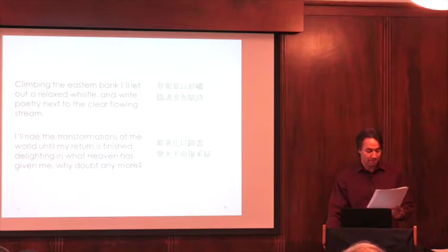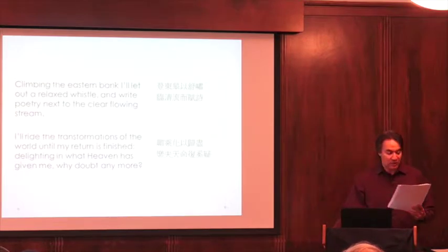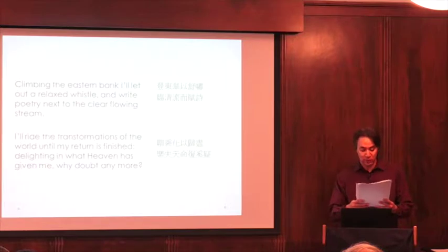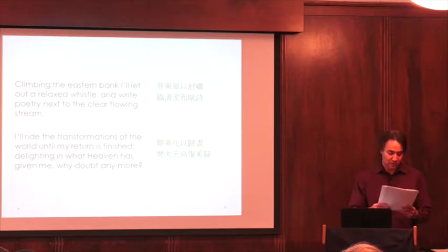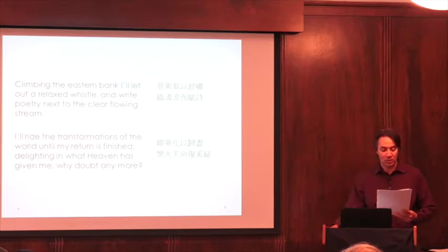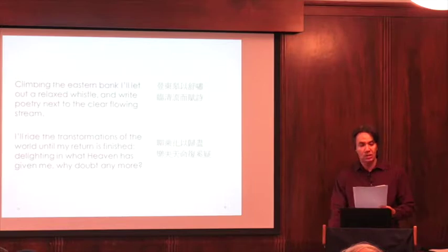I break up the uncultivated land on the border of the southern wilds, and keep to my awkwardness in returning to the farm. My homestead is a couple of acres. My thatched roof covers several rooms. Elms and willows shade the back eaves. Peach and plum trees unfold in front of the hall. The distant village is hazy and indistinct. Smoke from households floats gentle and soft. A dog barks far down some lane. A cock crows from atop a mulberry tree. In my home, there is no dust or disorder. A bare room allows for plenty of repose. Trapped in a cage for so long, I can finally go back to being myself.